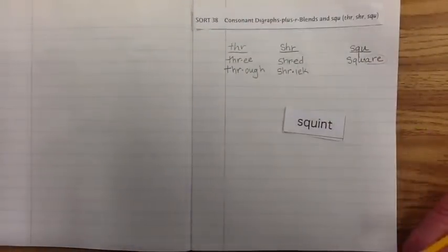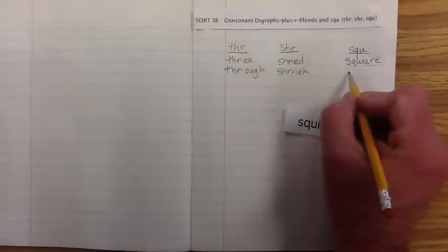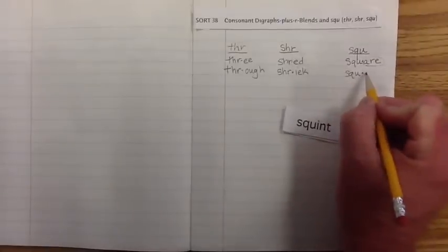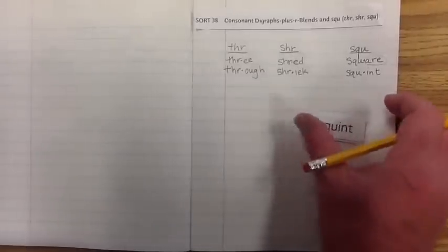All right, let's take a look at our last one here. Again, the exemplar is SQU. So let's go ahead and start that. SQU. And then we have the int. Squint. And that's what we do when the sun is in our eyes, right? We have to squint. Either that or put on our sunglasses.